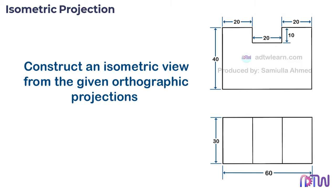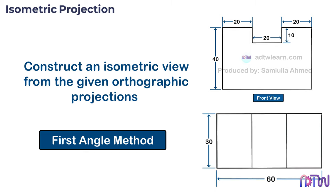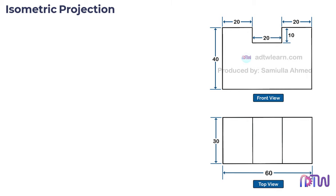We will be solving this problem using the first angle method. According to the first angle method, the top figure will be the front view of the object and the bottom figure will be the top view of the object. Before starting construction, we need to first draw the isometric axis.